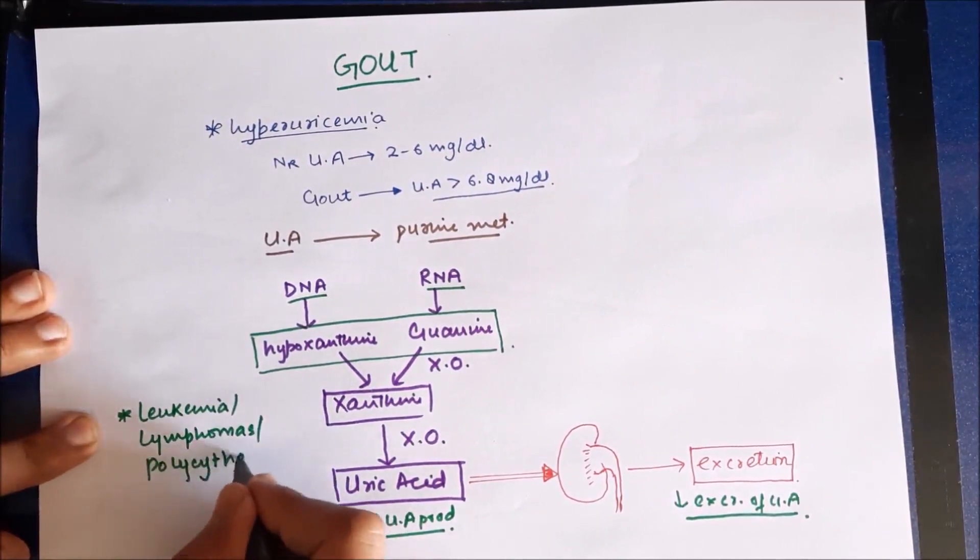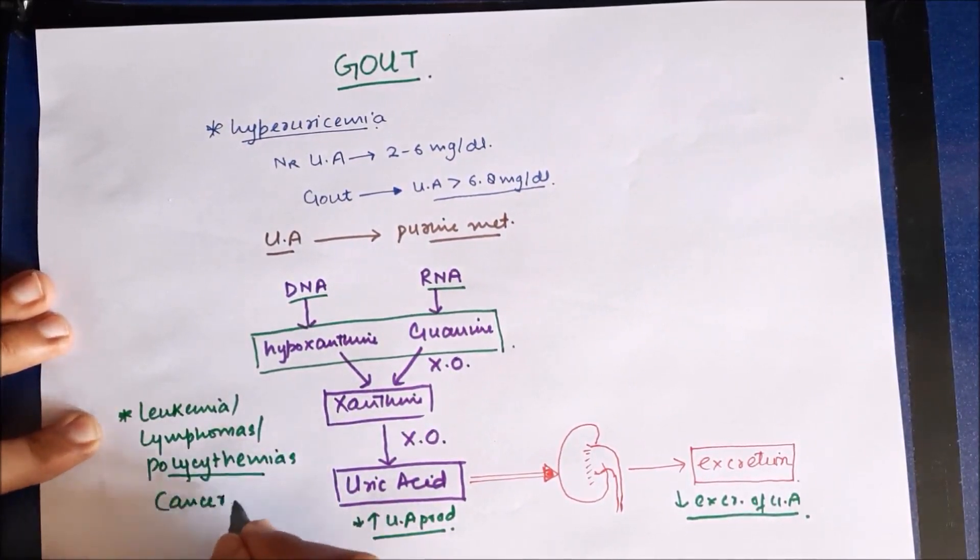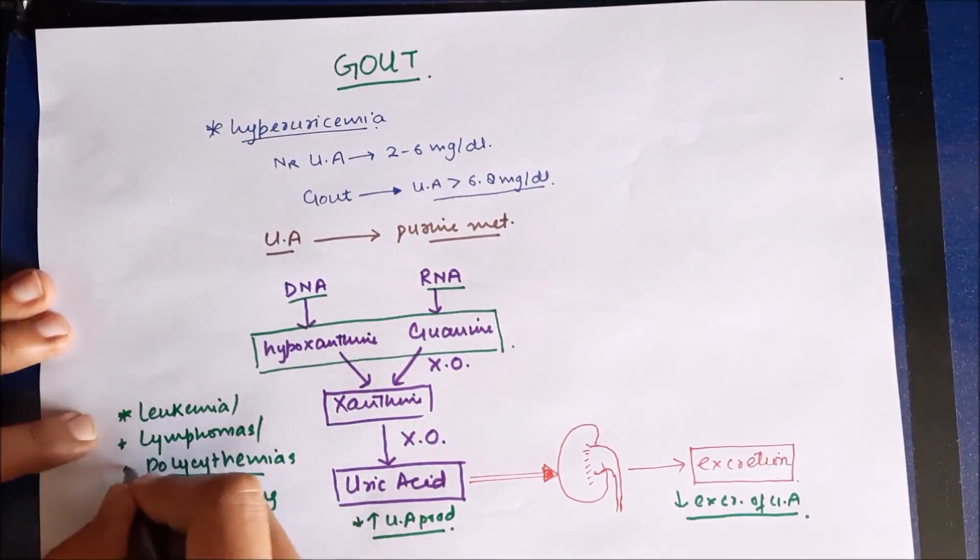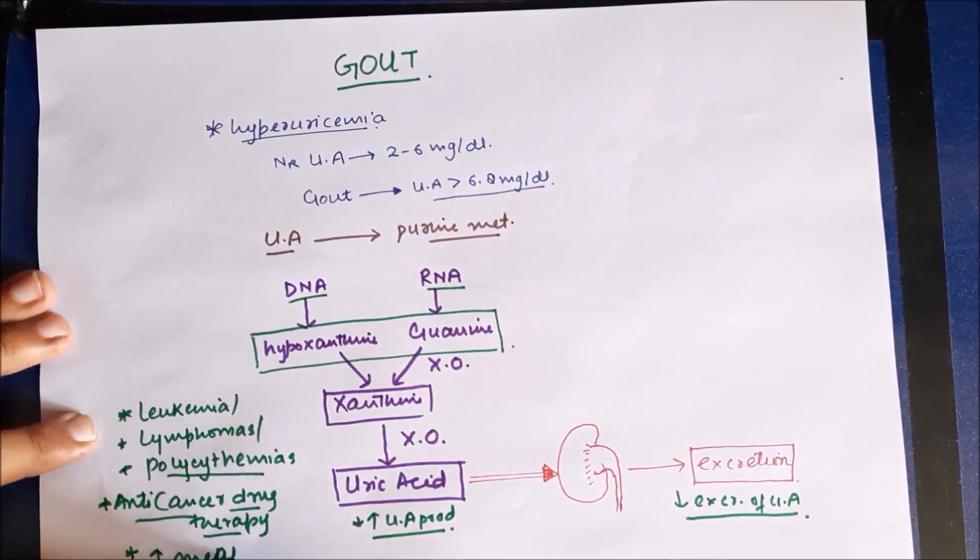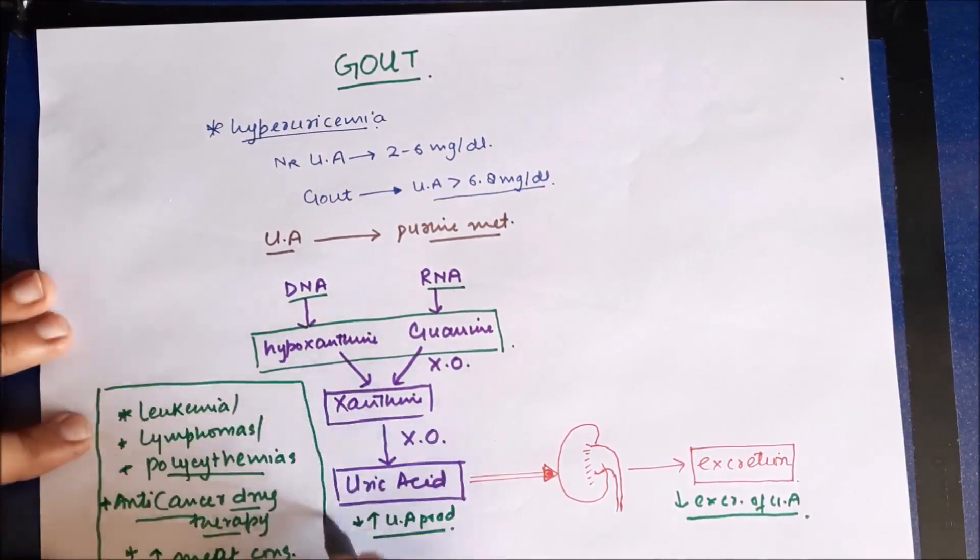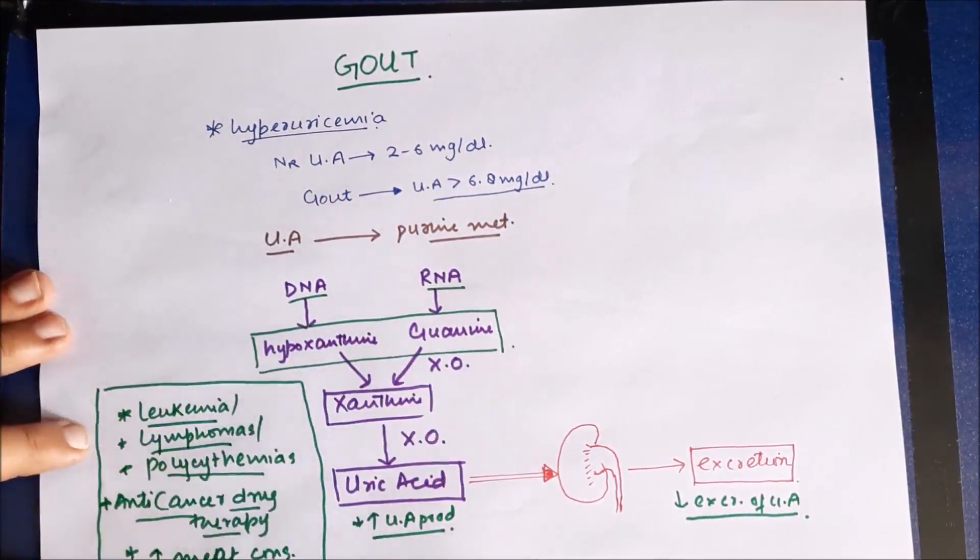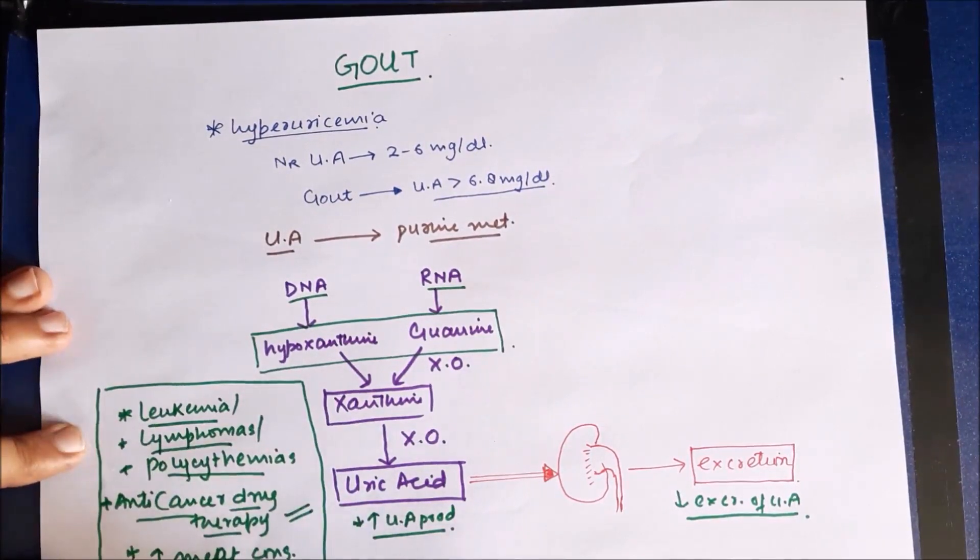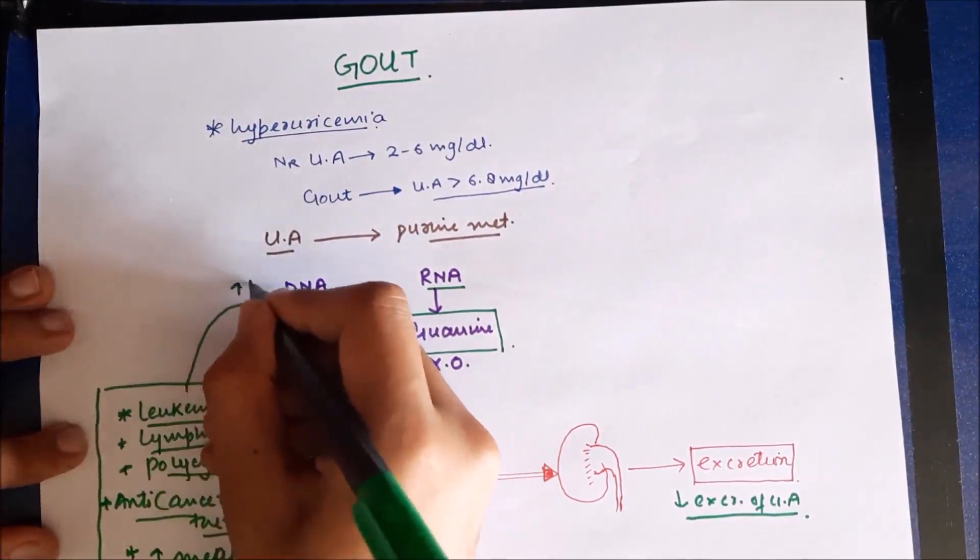Conditions such as leukemia, lymphomas, polycythemia, or even use of anti-cancer drugs result in increased DNA and RNA metabolism in the body. Also, increased consumption of meat results in increased metabolism of DNA and RNA, which predisposes to increased uric acid production and hyperuricemia.